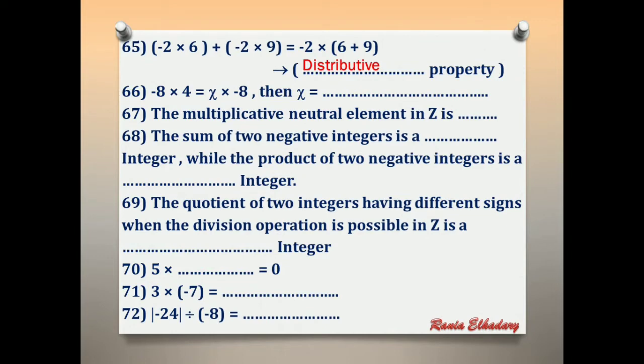Number 66: negative 8 × 4 = x × negative 8. Cancel negative 8 with negative 8. So x equals 4.